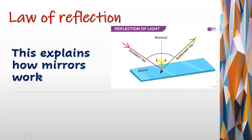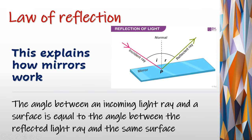There is an imaginary line — it's not a real line — and from this line there is an angle on each side. The angle between the incoming ray, or incident light ray, and the surface — angle I — is equal to the angle between the reflected light ray and the same surface. This means the angle between the incident ray and the mirror equals the angle between the mirror and the reflected ray. This is called the law of reflection, and this explains how mirrors work.